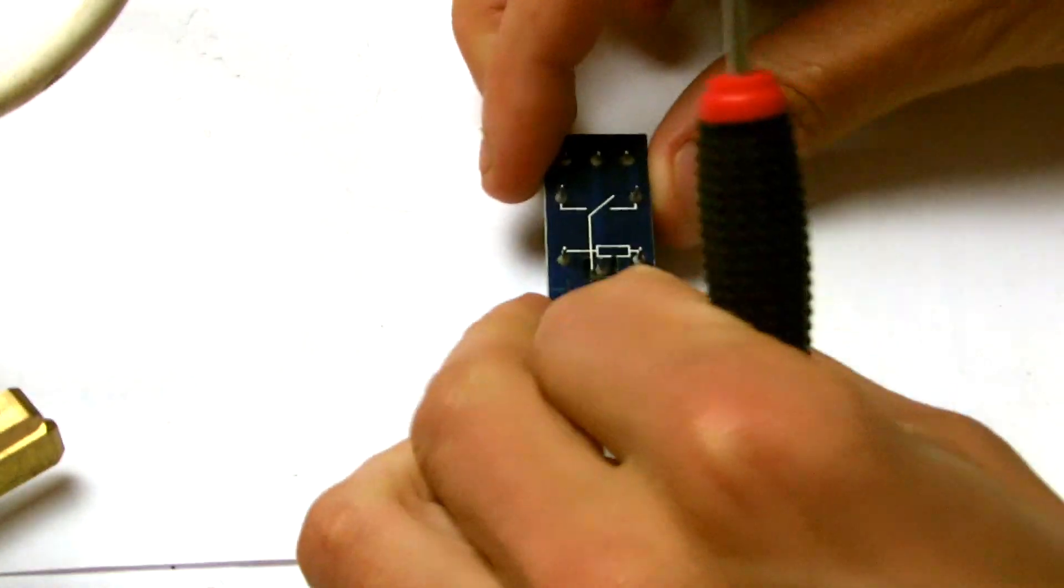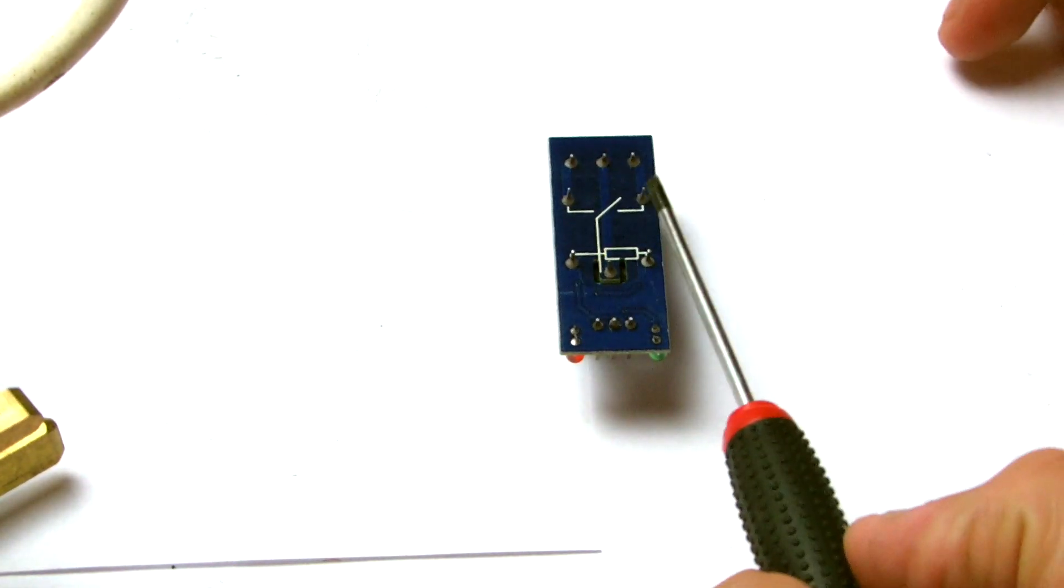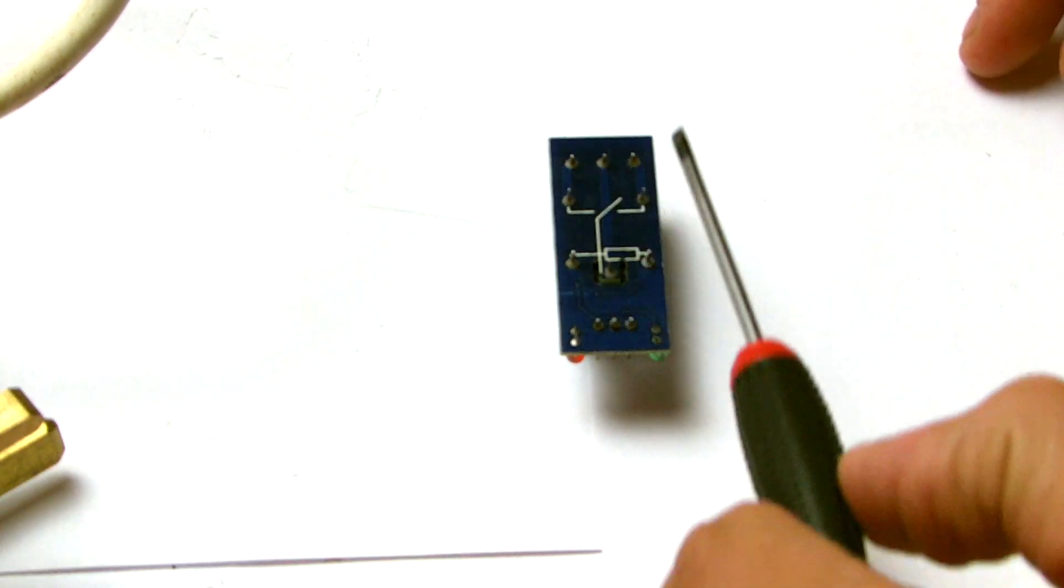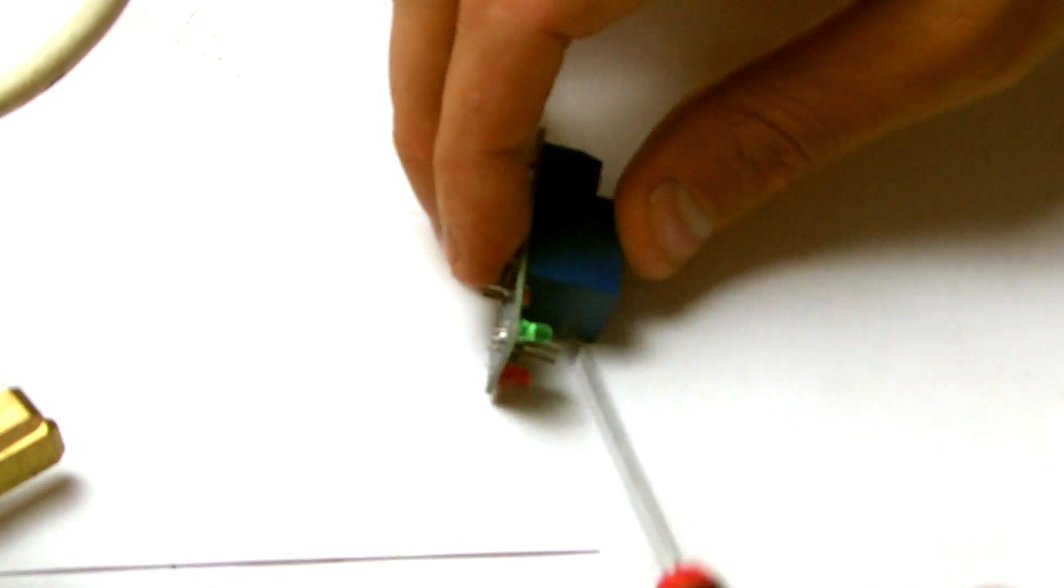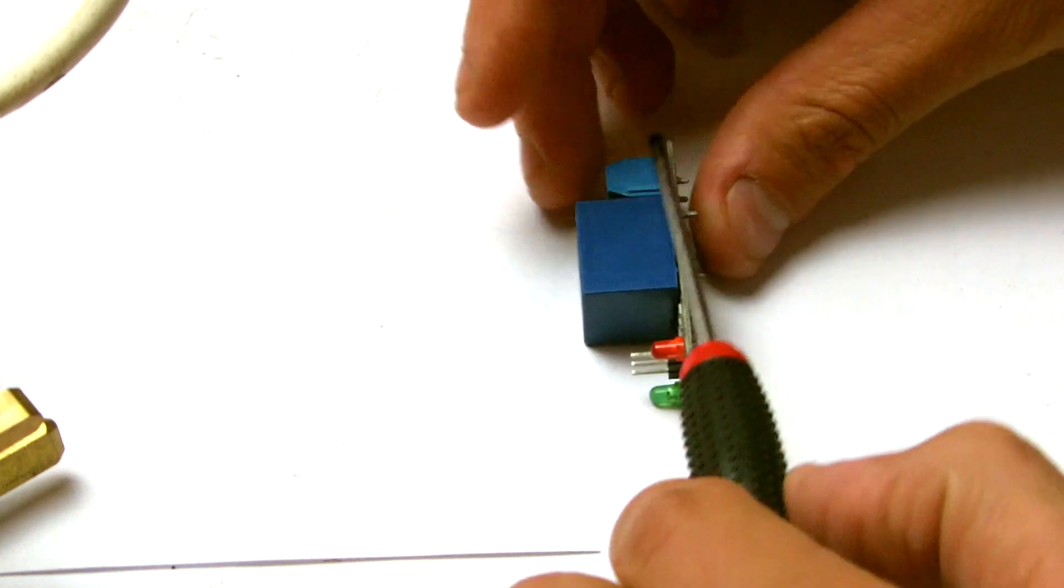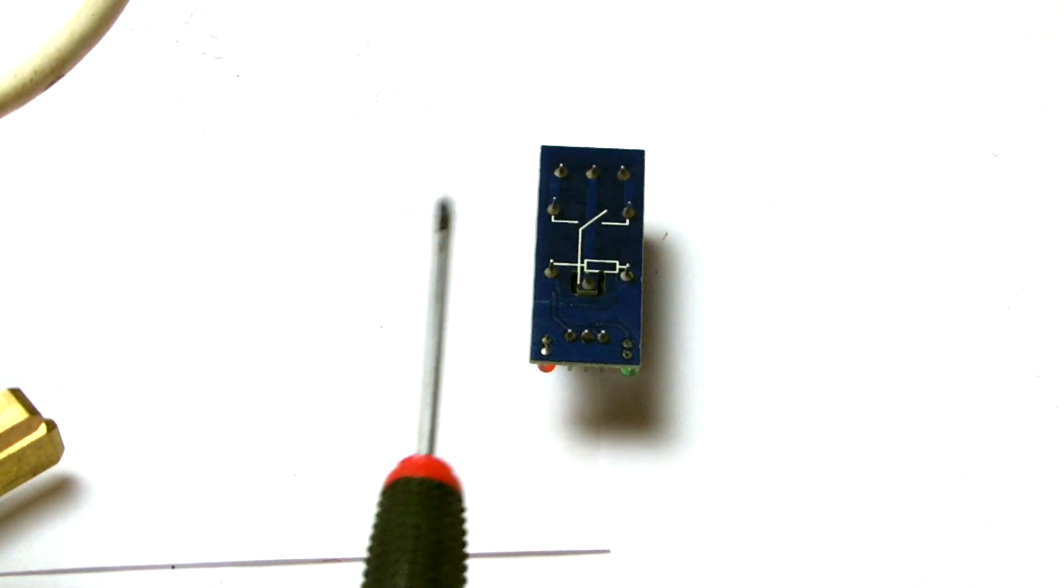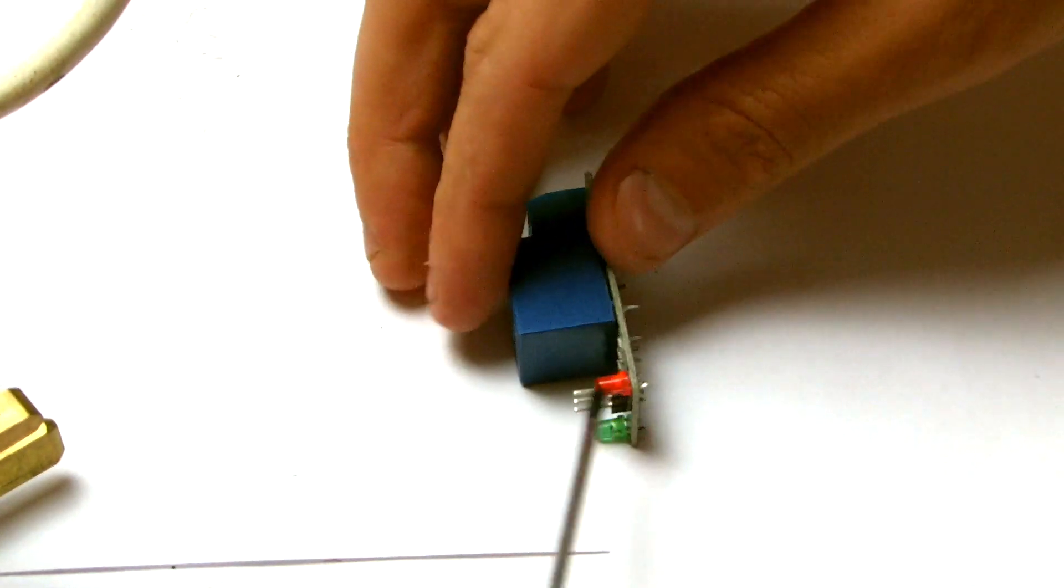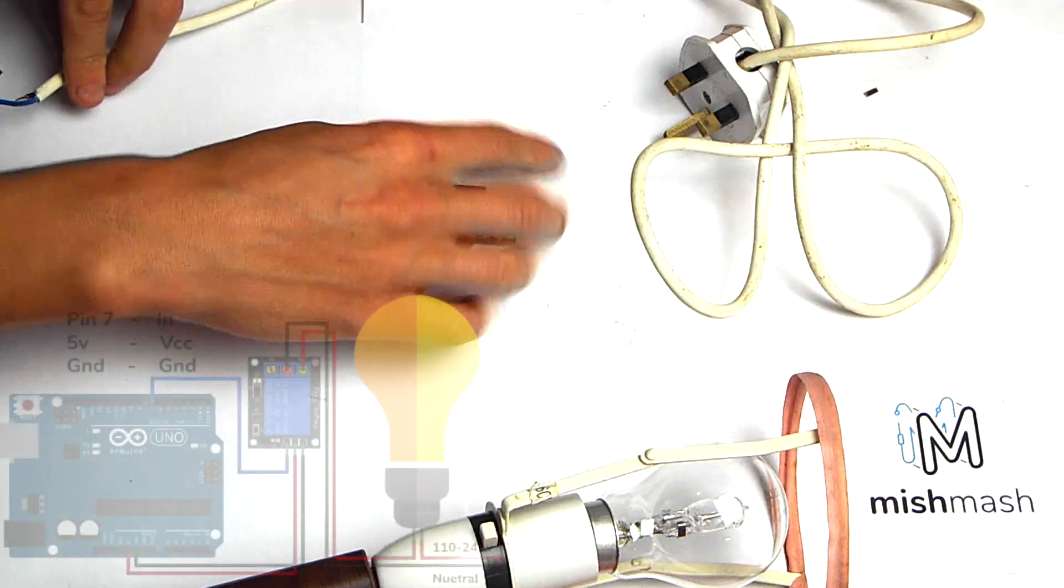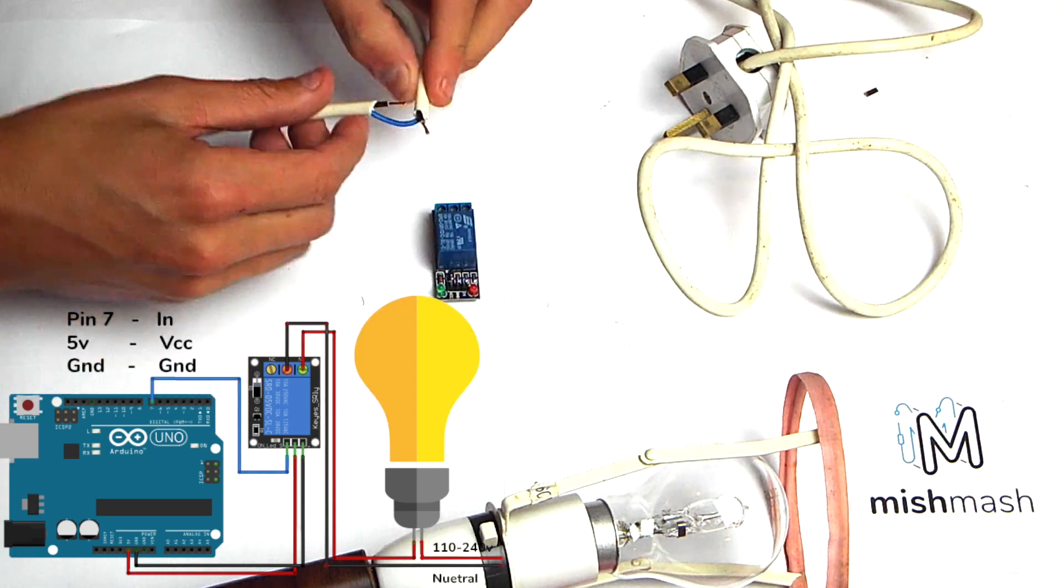Before we screw in these connections, please notice, although this is a single channel relay, you have both normally open and normally closed contacts. You can see this from the diagram on the back of the relay. I tend to wire to the normally open relay.